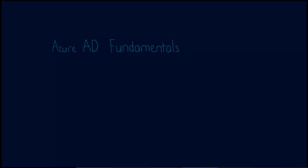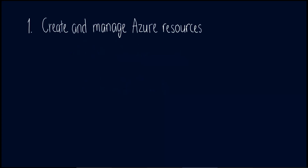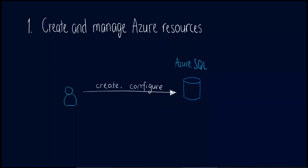Since we've now covered the Azure AD fundamentals, we can move into the Azure AD use cases — specifically in terms of how we work with data services. I've categorized these into two. The first aspect is that we need to create and manage Azure resources. When starting to work with any data services on Azure, the first thing is to create some services. Moving forward, we need to make configuration changes. You might have a group of users that need to do tasks like creating, configuring, and removing services — whether it's a single Azure SQL database or building a full data platform solution.